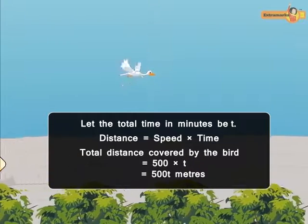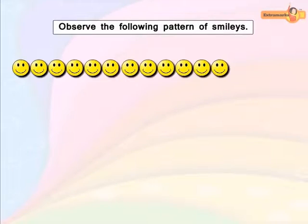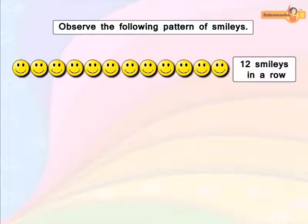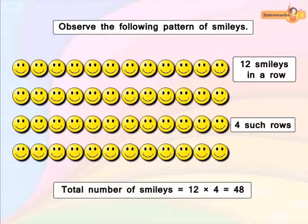Now observe the following pattern of smileys. We can see 12 smileys in a row. If there are four such rows, then the total number of smileys is equal to 12 × 4, which is equal to 48.